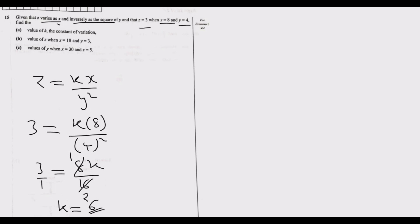Now part b: find the value of z when x equals 18 and y equals 3.